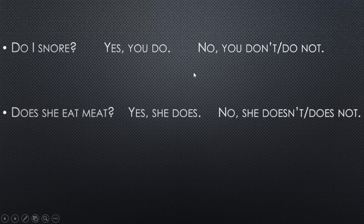Does she admit? Again: the auxiliary verb, a subject, the base form of the main verb, and the rest of the sentence. Does she admit? Yes, she does. Or no, she doesn't. Or no, she does not. Pretty simple, right?